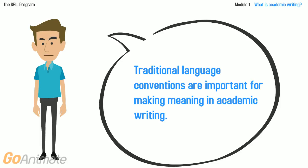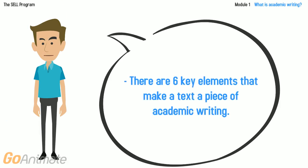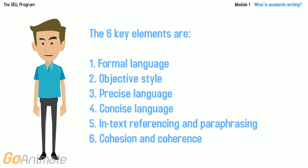There are six key elements that make a text a piece of academic writing. The six key elements are: formal language, objective style, precise language, concise language, in-text referencing and paraphrasing, and cohesion and coherence.